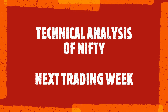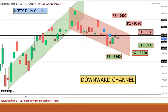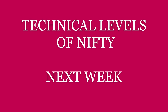Coming to the technical analysis of Nifty for next trading week — from the daily chart, Nifty was traveling in an uptrend for the month of April and started reversing during the first week of May from the upward channel, giving a breakdown below 9600 and forming a new downward channel. This downward channel is our reference and we need to travel along with it as long as Nifty doesn't break above or below. The first resistance comes around 9130, 9390 and 9600, and the support levels from this channel are 8935, 8750 and 8360.